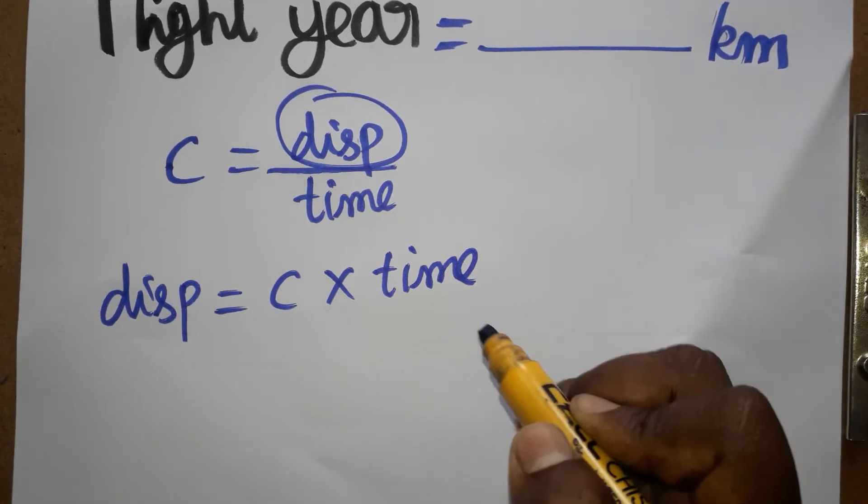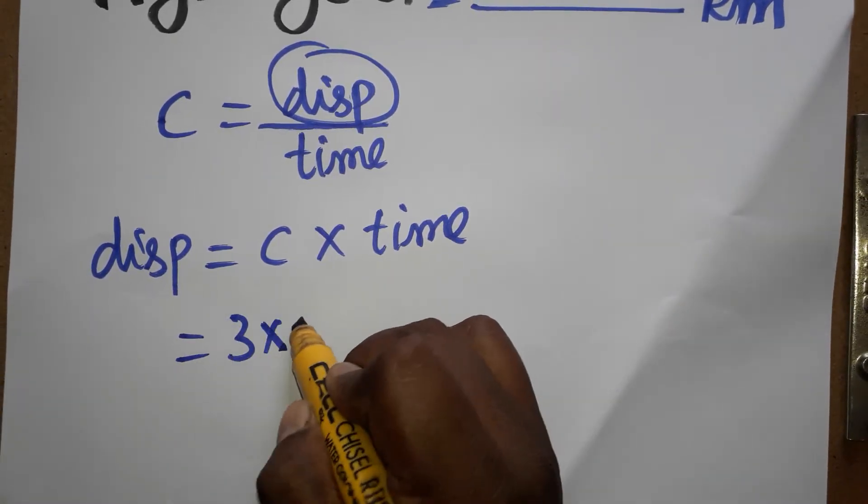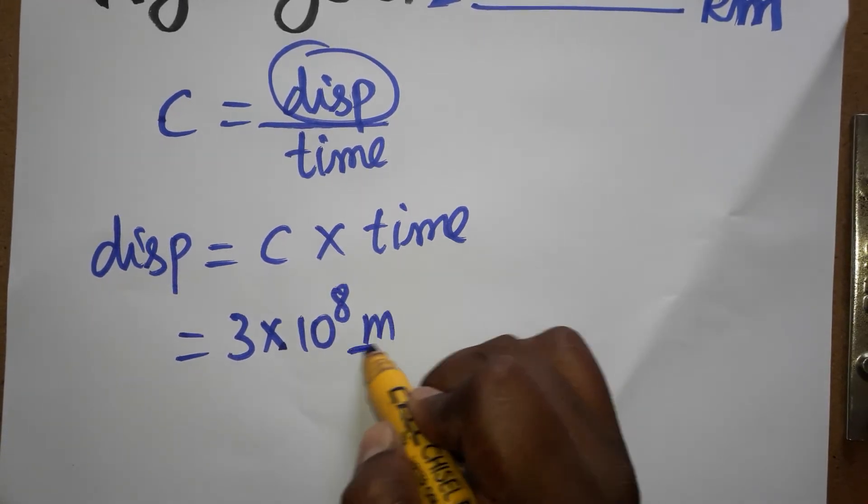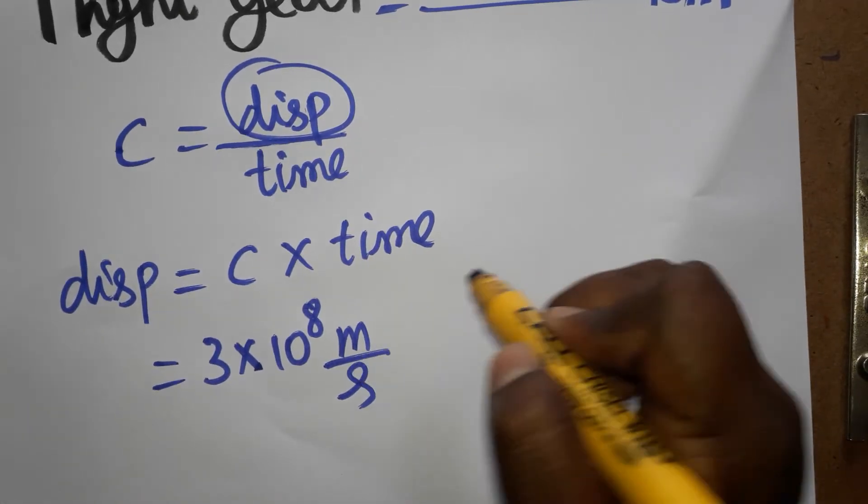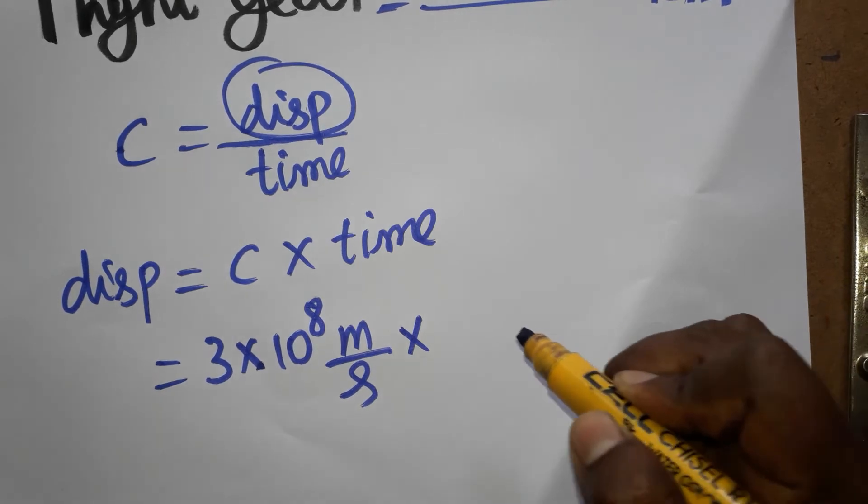Here c is representing as the velocity of the light. So it is 3 into 10 power 8 meter per second velocity of the light. Time it is one year, light travels in one year, that means 365.25 days.